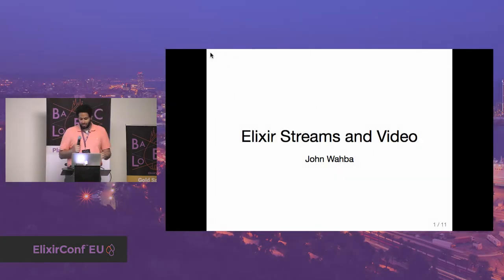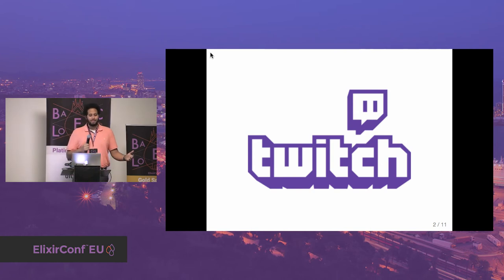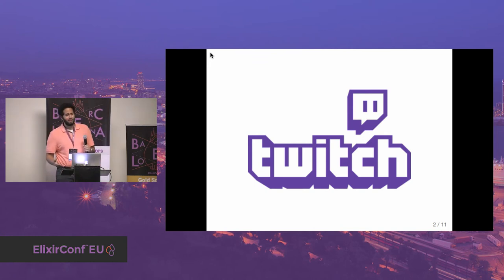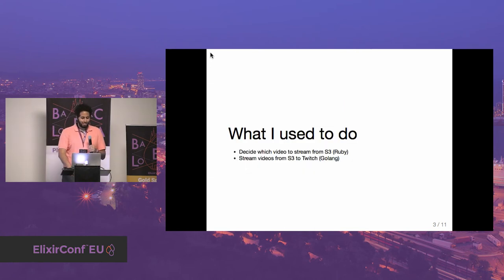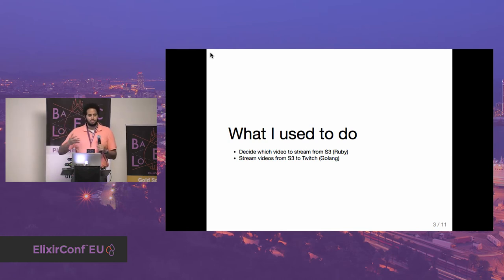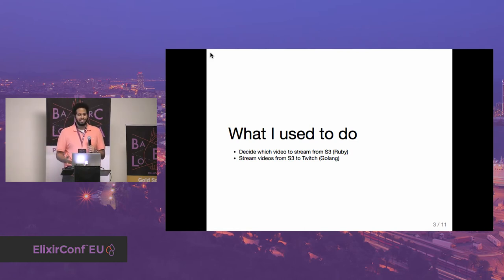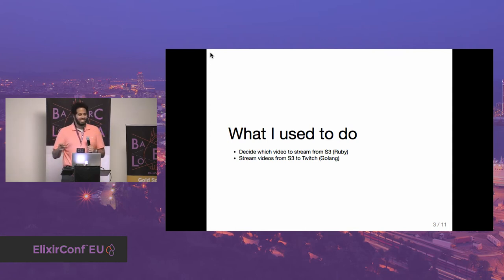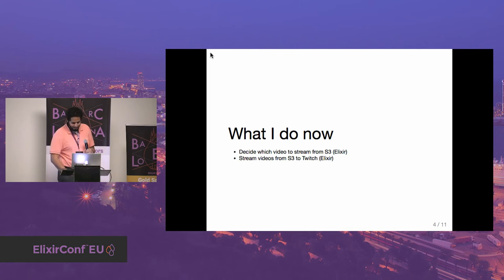Good afternoon, everyone. I'm John Waba. I work at Twitch — we do live streaming. I'm going to talk about Elixir streams and video. One thing I've read in blog posts is that Elixir is not great for data-intensive things like video transcoding, so let's just use FFmpeg for that. We previously had two daemons — one in Ruby for business logic and one in Go for concurrency — but pleasantness doesn't go across language boundaries. Now I do the same thing but write both in Elixir.